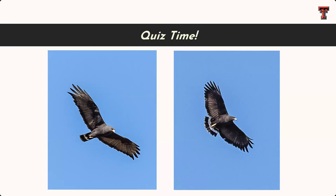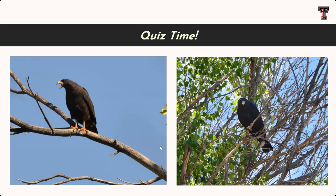I want you to look at comparison photos and figure out which is the Black Hawk and which is the Zone-tailed Hawk. On the left is the Zone-tail, on the right is the Black Hawk. In the next image: on the left, long yellow legs and really yellow lores — that's our Black Hawk. On the right, wingtips coming all the way down to the tail tip — that's a Zone-tailed Hawk.